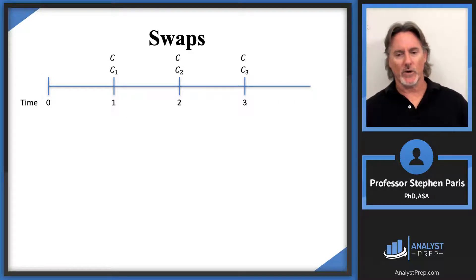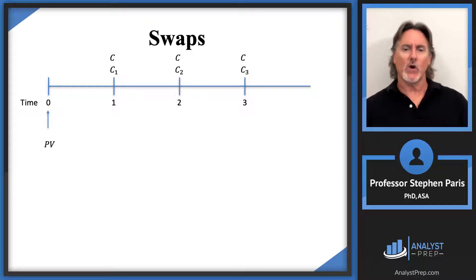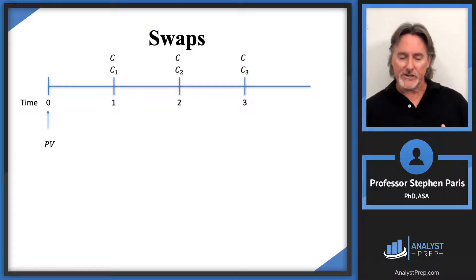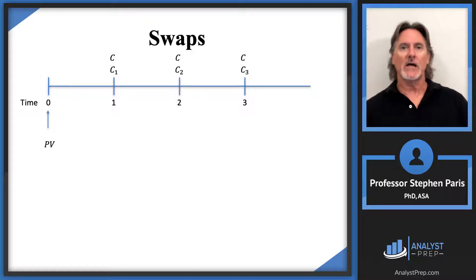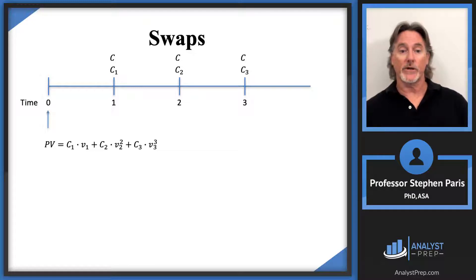When we say swap the payments, we want to do so in a fair way. A fair way would be if we did so such that at time zero, the present value of the payments are equal to each other. We're going to be in the context of a term structure of interest rates. So the present value of the original set of payments: at time one I have a payment of C₁, discounted back to time zero by multiplying by V₁; the payment at time two I multiply by V₂ squared with respect to the two-year spot rate; and the payment at time three I multiply by V₃ cubed.